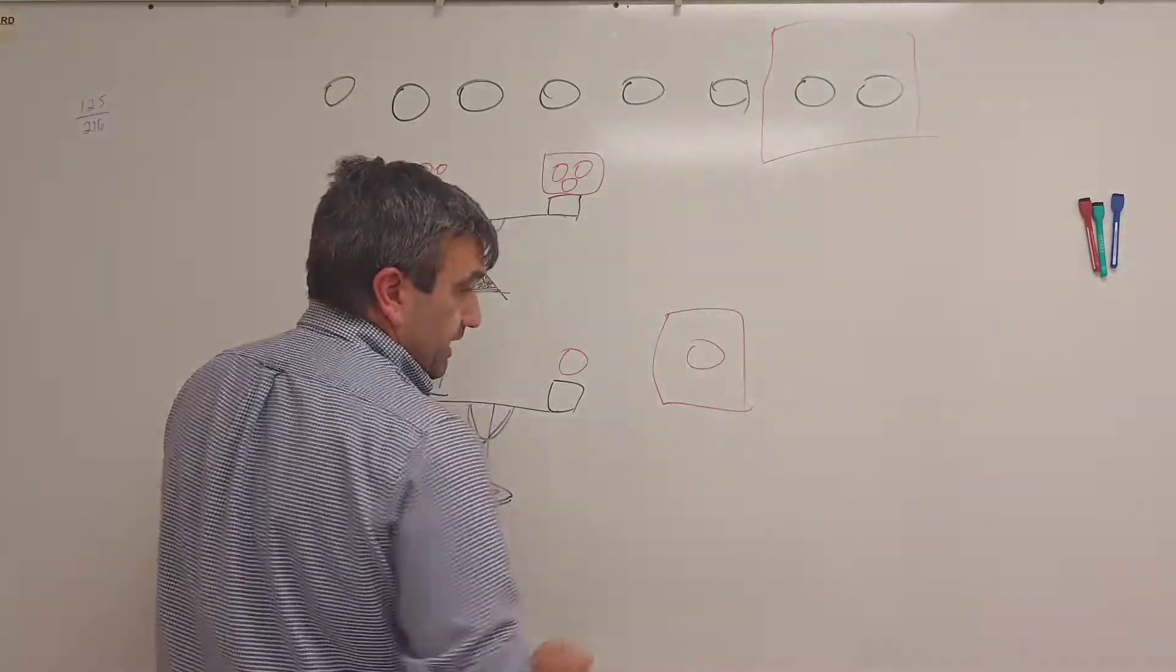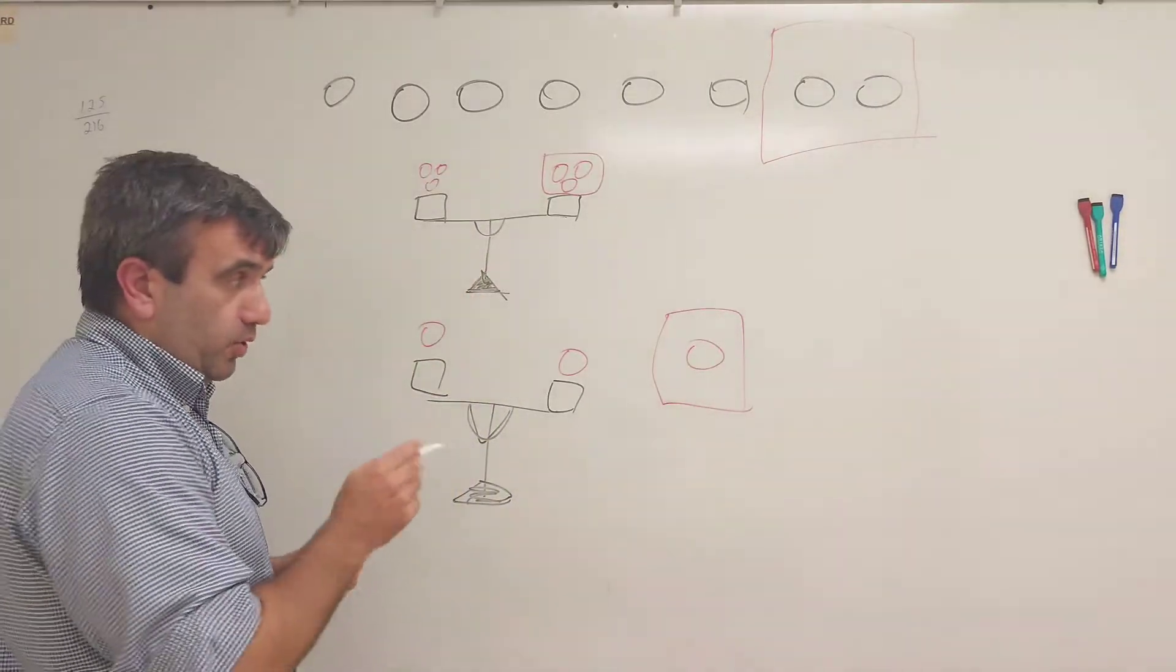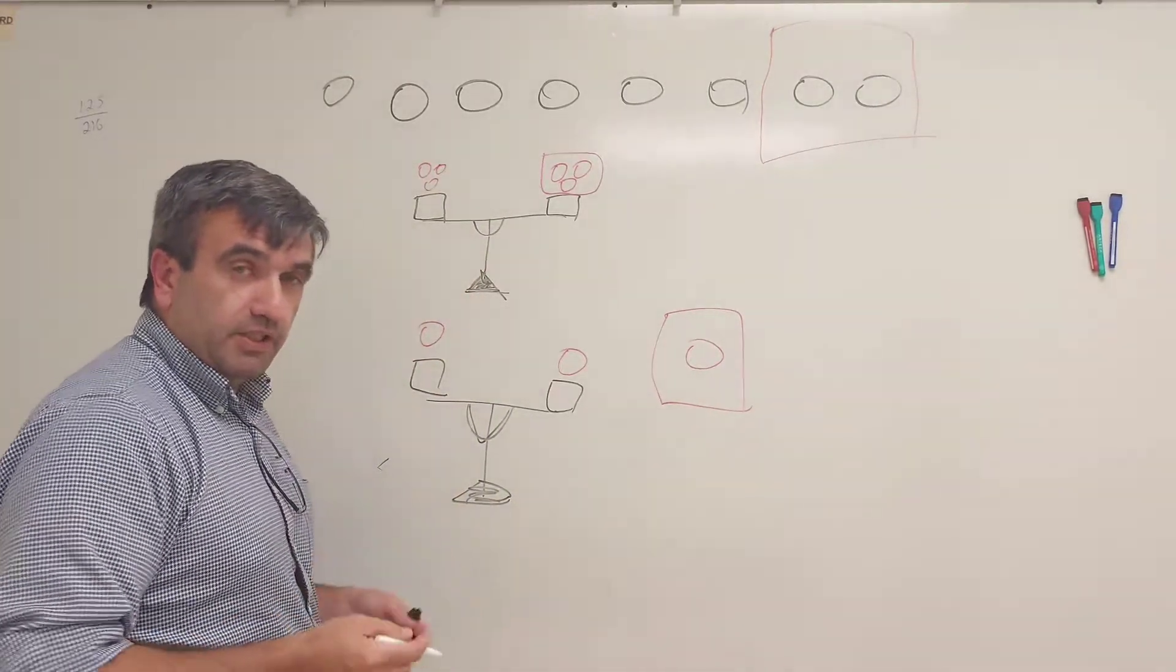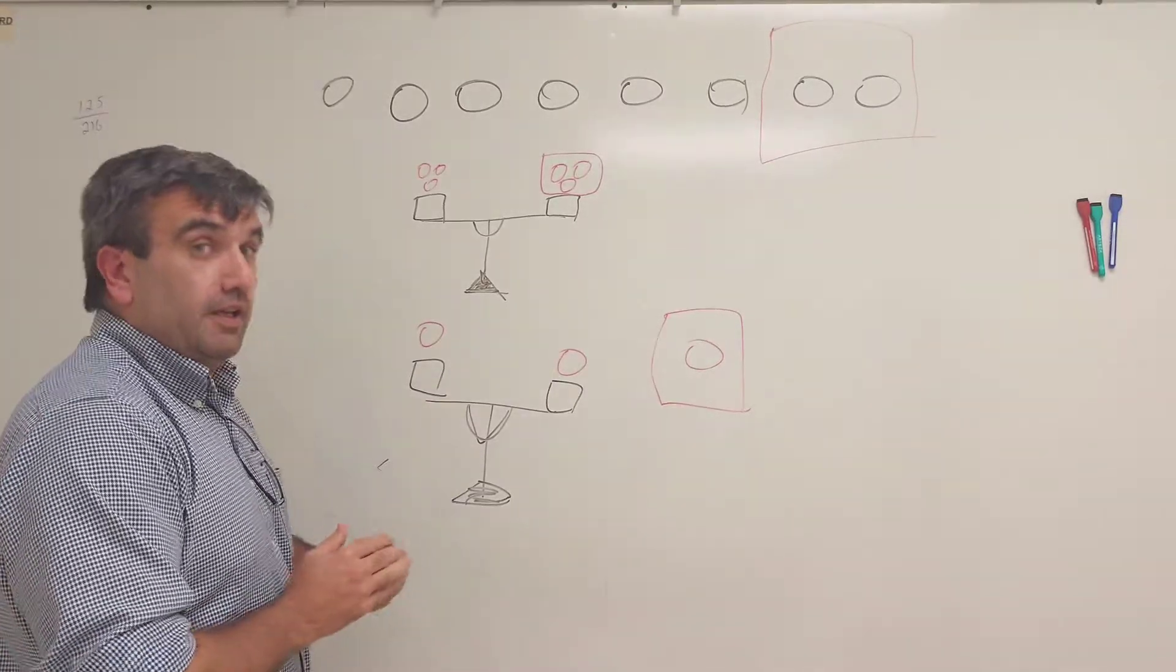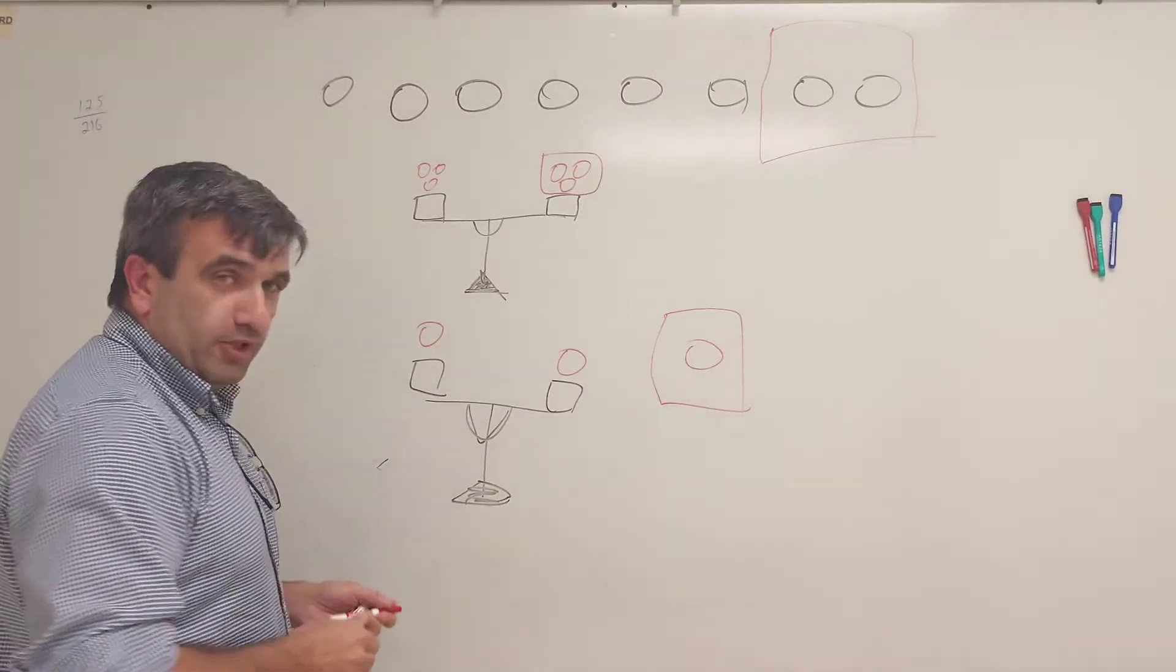If the scale is even, it means that this one is the Bitcoin. And again, we did two measurements. Here we go, we found our bad coin using two measurements.